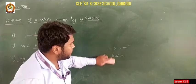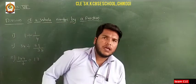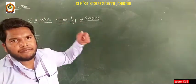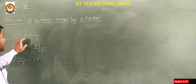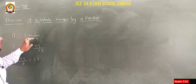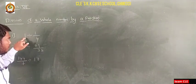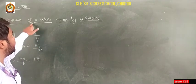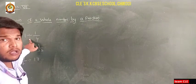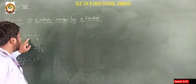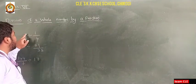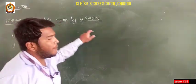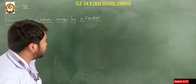So what is our concept? Our concept is division of whole number by fraction. Our first question is 1 divided by 1/4. So 1 is a whole number and 1/4 is a fraction. The concept says division — the division symbol is used here — and you need to solve this as division of whole number by fraction.